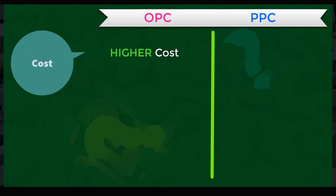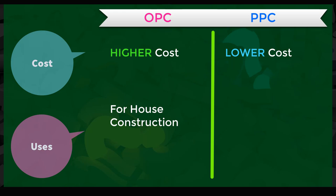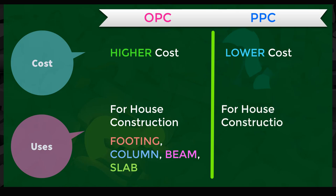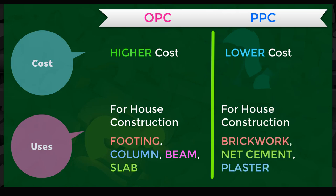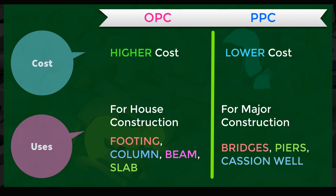OPC cement is costlier compared to PPC, which makes PPC a better option for residential house construction. Both are good for construction, but OPC 43 and 53 grade can be used in footing, column, beam, and slab construction, while PPC is used for brickwork, plastering, tile fixing, and other finishing work. For major construction in marine or underwater zones, PPC cement is highly recommended — for structures like bridges, piers, caisson wells, jetty, docks, and harbours.